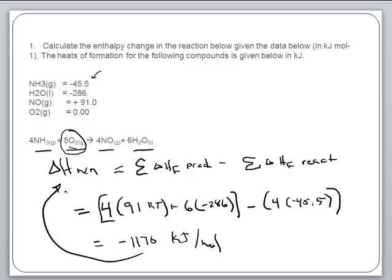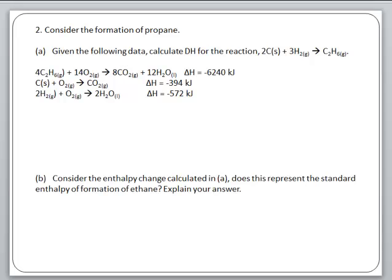That negative 1,170 kilojoules per mole represents the enthalpy of the reaction. Now let's take a look at the second problem. It says consider the formation of propane — actually the formation of C2H6 — and you're given various delta H values: the combustion of C2H6, the combustion of carbon, and the combustion of H2.